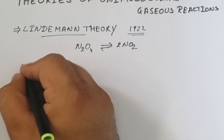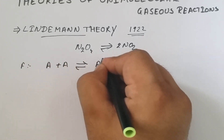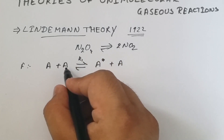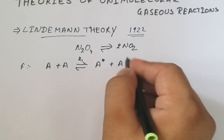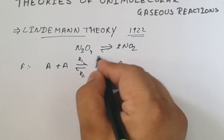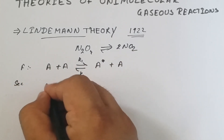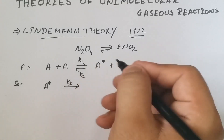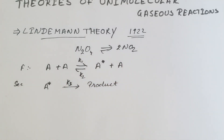The first step of the reaction is: two molecules of A react to give A* plus A, where k₁ is the rate constant for conversion of the starting material into the activated molecule, and k₂ is the rate constant for decomposition of the activated molecule back into the reactant. The second step: the activated molecule A* decomposes into the desired product with rate constant k₃.